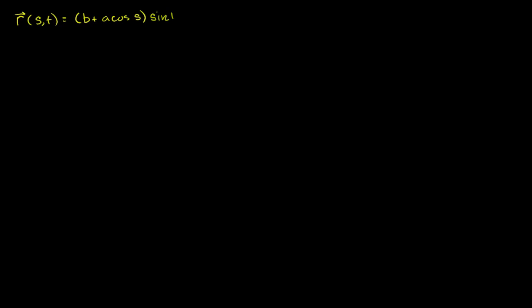The function equals b plus a cosine of s, times the sine of t, times the i unit vector. Plus b plus a cosine of s, times cosine of t, times the j unit vector. Plus a sine of s, times the k unit vector in the z direction. This is true for our parameters s and t both between 0 and 2 pi, so we don't wrap multiple times around the torus.